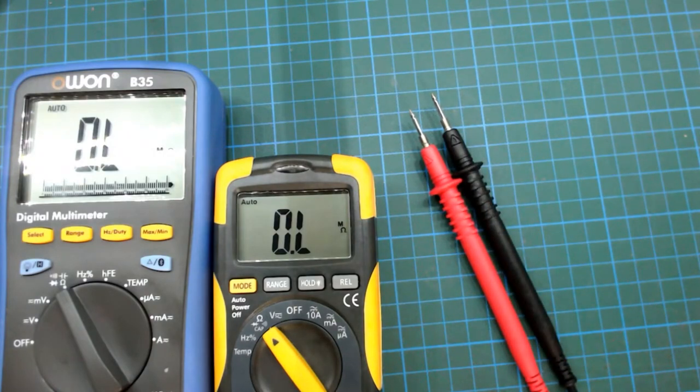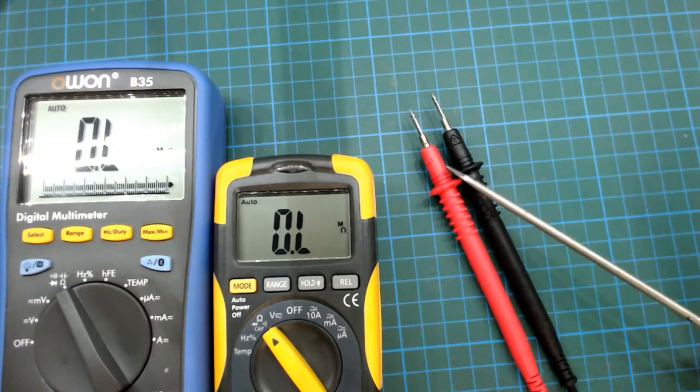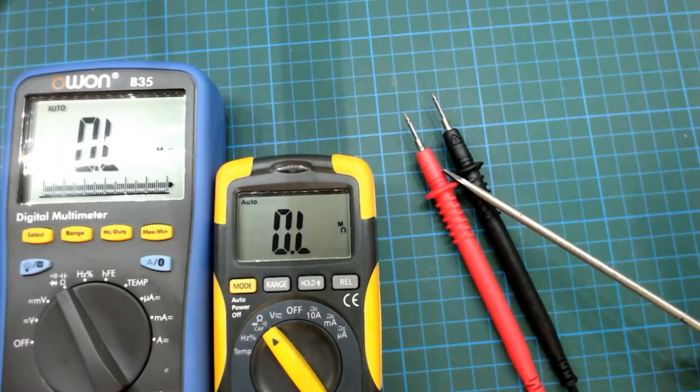Depending on your multimeter it could work a few different ways but mostly it's going to pass a small voltage, say about half a volt, and look to see if any current flows.